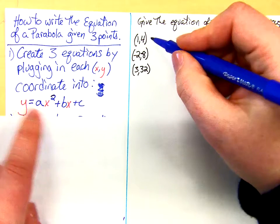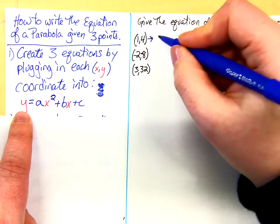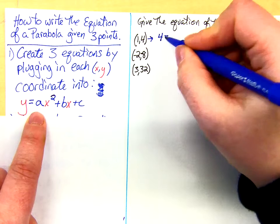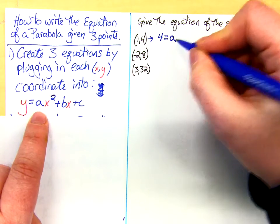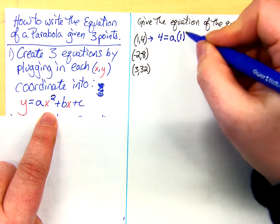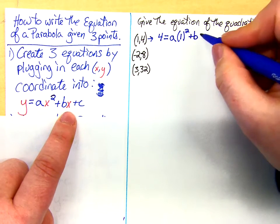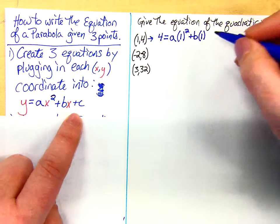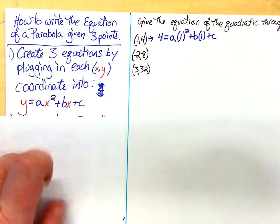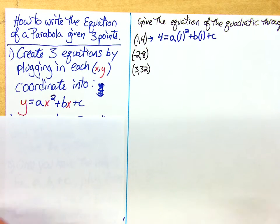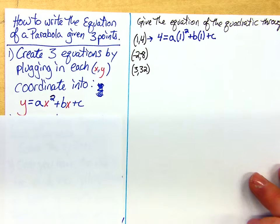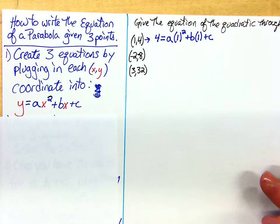For example, this first one is going to look like this. y is 4 and that's going to equal, I don't know what a is, but I do know what x is. x is 1, so I plug in 1. x is 1, I don't know what b is, I do know what x is, so I plug in 1 again for x, and I don't know what c is. Do you see how I did that? I plugged in the x and the y into the standard form equation.